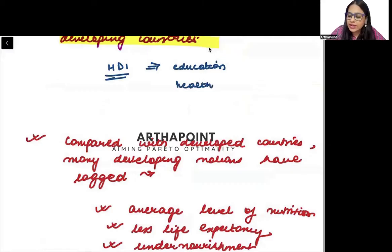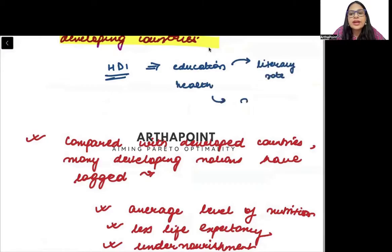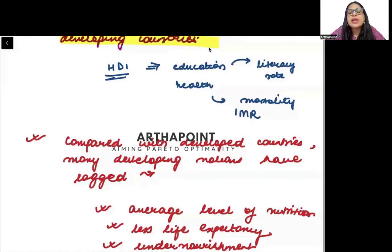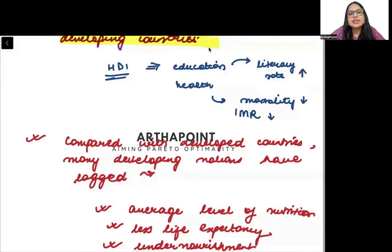If I compare the literacy rate in any country, if I look at the death rate — the mortality rate — or the infant mortality rate (IMR) of different countries, it has been seen that all of these have improved. Death rate has declined, mortality rate has declined, and literacy rate has increased. In every aspect, there has been development.